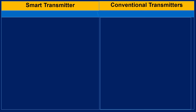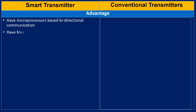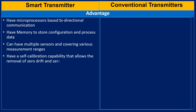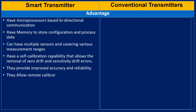The advantages of smart transmitters include: microprocessor-based bidirectional communication, memory to store configuration and process data, support for multiple sensors covering various measurement ranges, self-calibration capabilities that allow removal of zero drift and sensitivity drift errors, improved accuracy and reliability, analog and digital communication on two-wire loops simultaneously, and improved turndown ratio and stability.